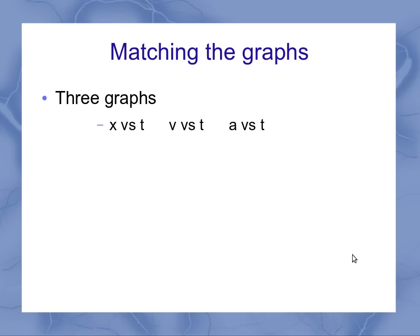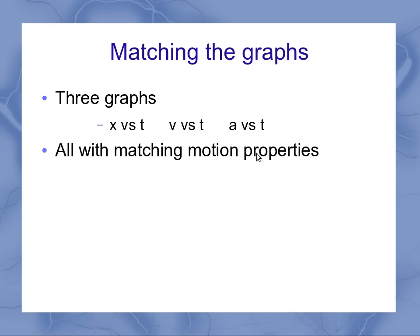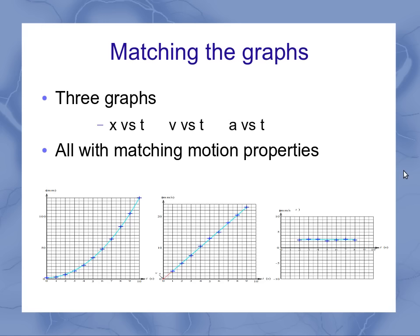The other thing you'll need to practice is where you've got all three graphs — x versus t, v versus t, and a versus t — and you want them all to show the same motion properties. Here's an example: with a positive constant acceleration on the acceleration graph, the velocity graph shows a positive upward slope indicating constant acceleration as a straight line. On the position graph, we're always sloping upwards for positive velocities, and the curve gets steeper and steeper — or faces upwards — indicating positive acceleration.